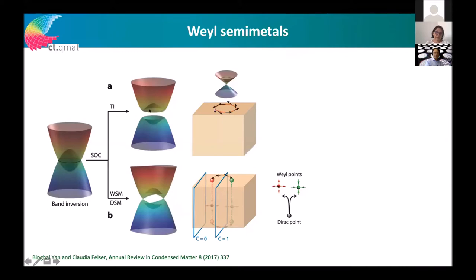Depending on the symmetry of the crystal, it can happen that some high symmetry points are not allowed to be forbidden — so they stay degenerate. Depending on the position of these crossing points, we have Weyl semimetals or Dirac semimetals, which have very unique and interesting properties. In Dirac semimetals, this crossing point is at the high symmetry point.